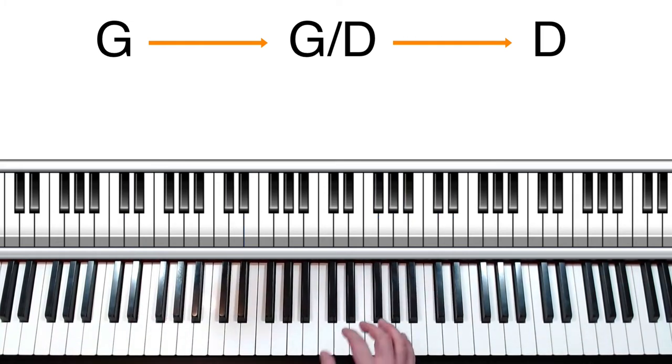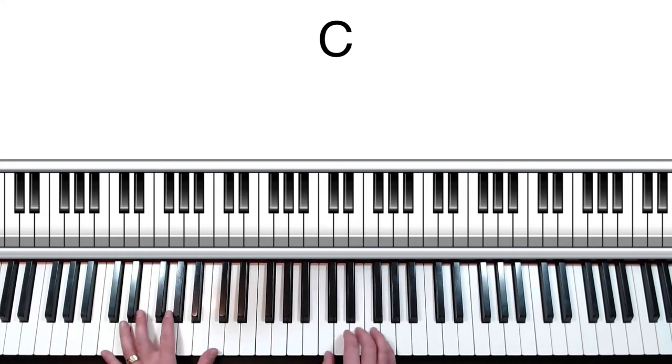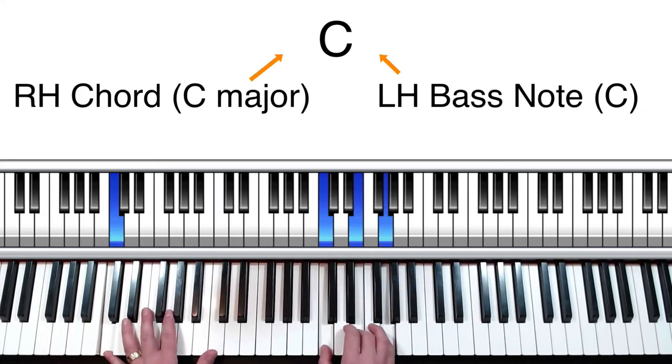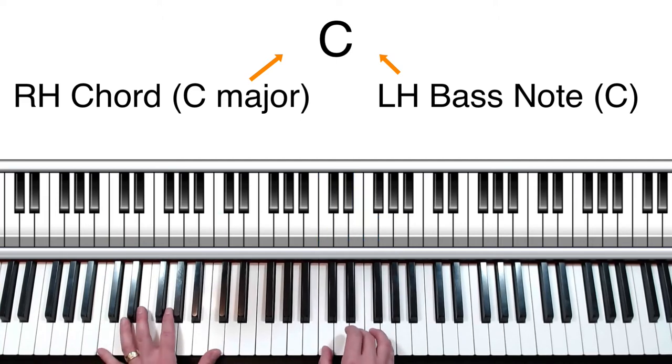Well, let's look at this example. We have a C chord, whereas if it just said C on the page, you would know, okay, I'm going to play a C in my right hand. I'm going to play C bass notes in my left hand. That's great.